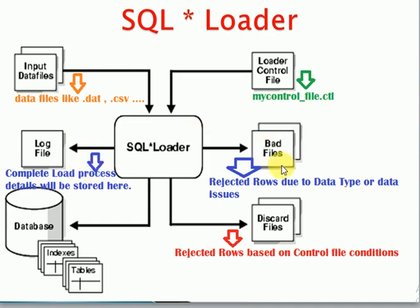The next two files are the bad file and the discard file. Most developers get confused about these. The bad file contains system-rejected records. Records end up in the bad file due to data type errors, constraint-related errors such as null constraints, referential integrity violations, or duplicate records — these system-rejected records will be stored in the bad file.